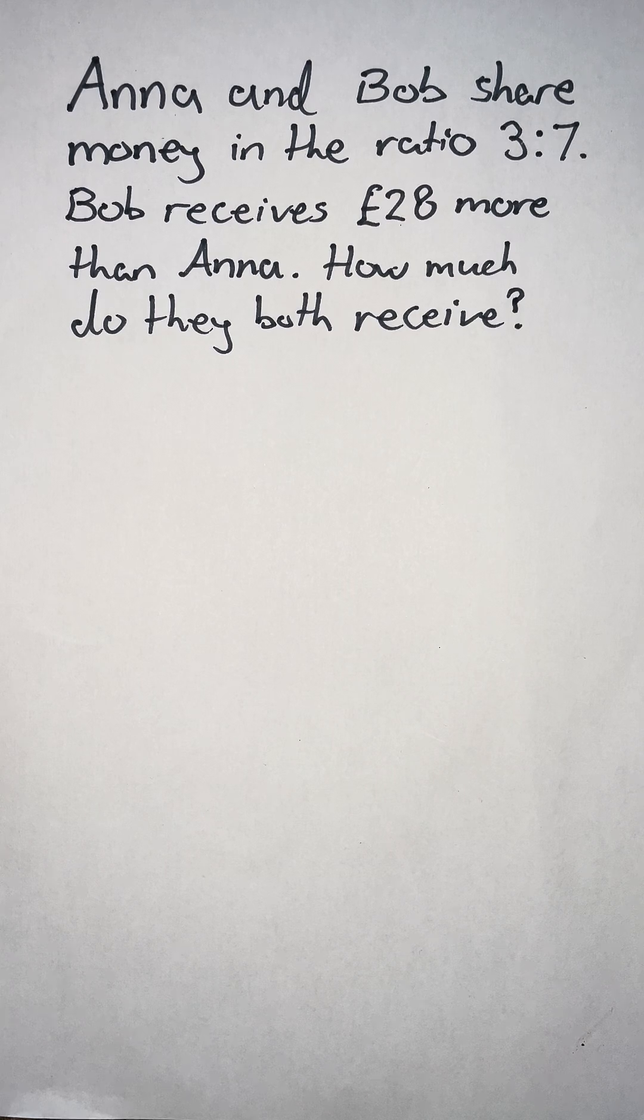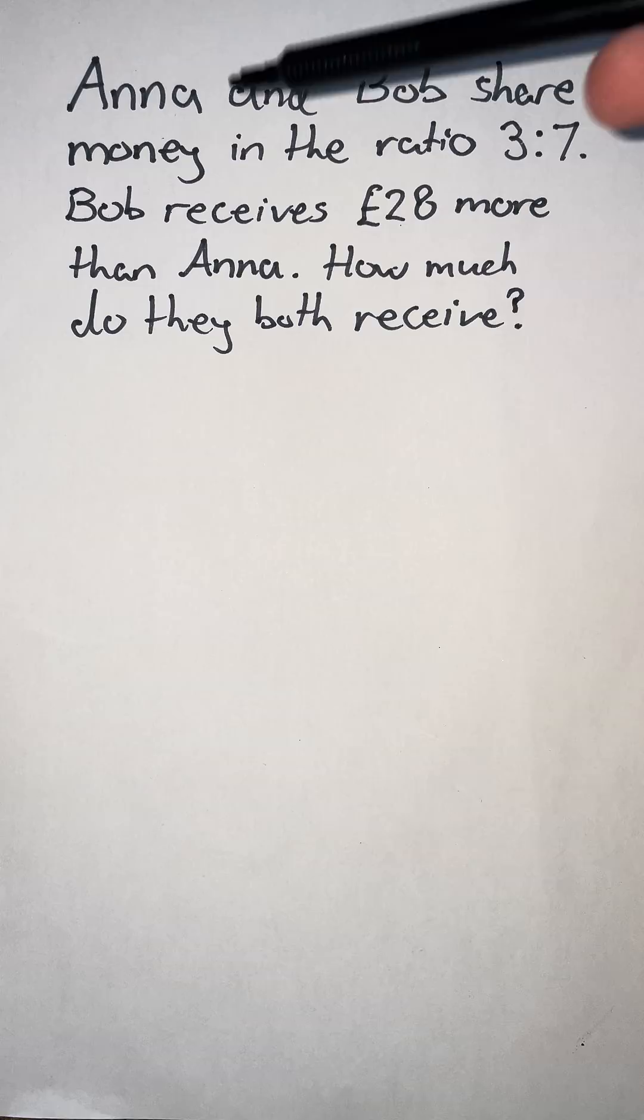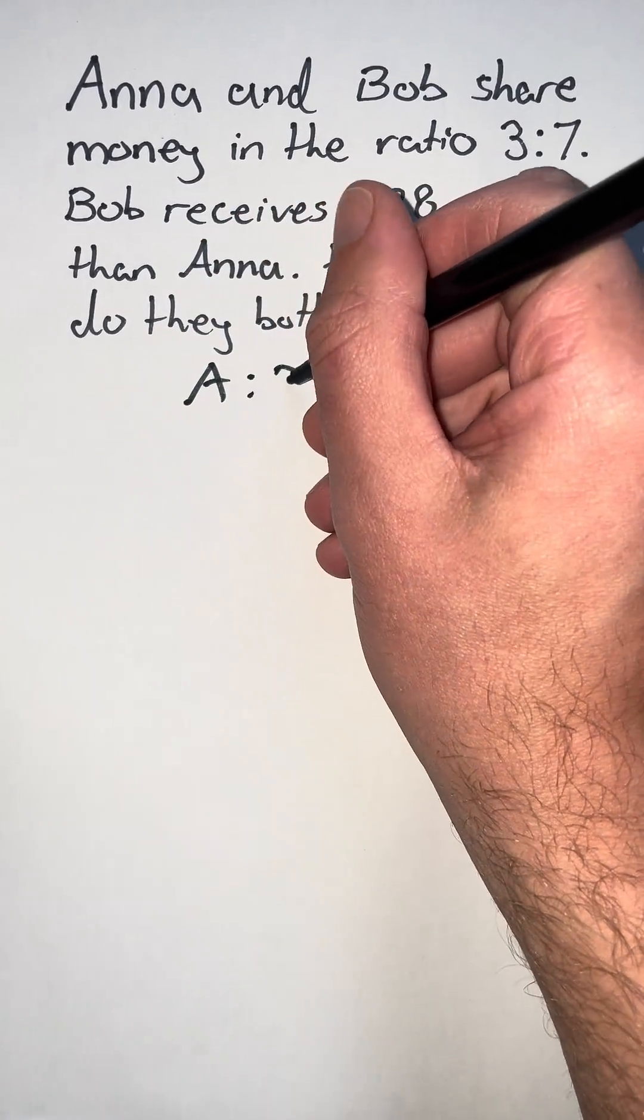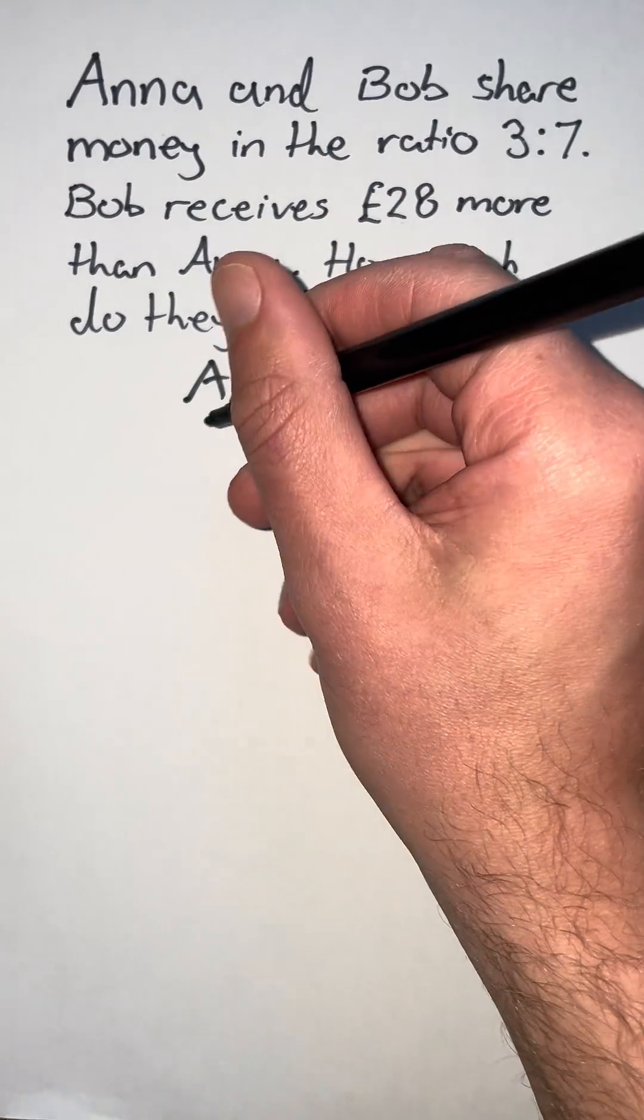To start this question, I'm going to label my ratio. I have Anna and Bob, so I'm going to write this as A to B. And the ratio for A to B is 3 to 7.